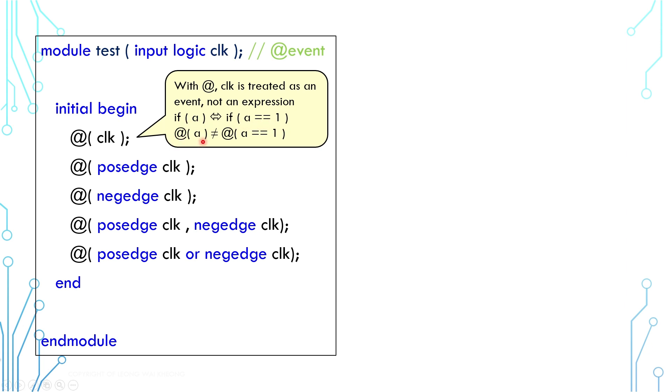However, with @, clock is an event, and it means changes of the clock. @ clock is the same as @ posedge or negedge of the clock.